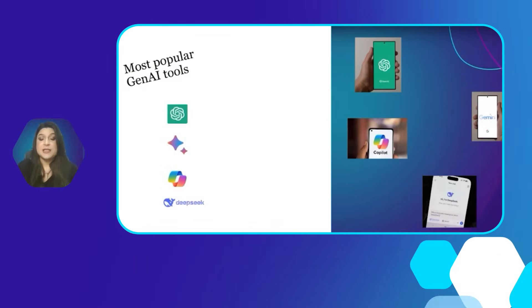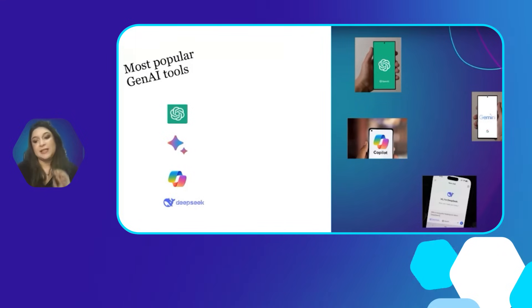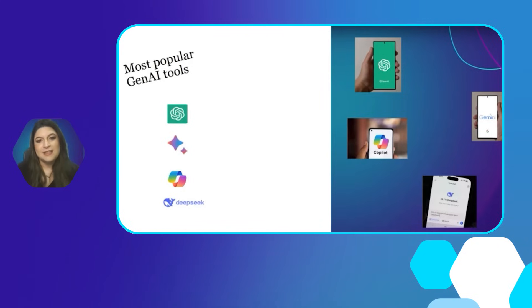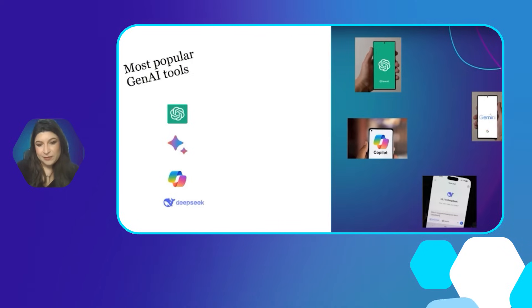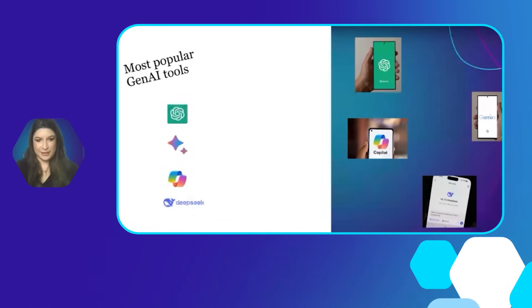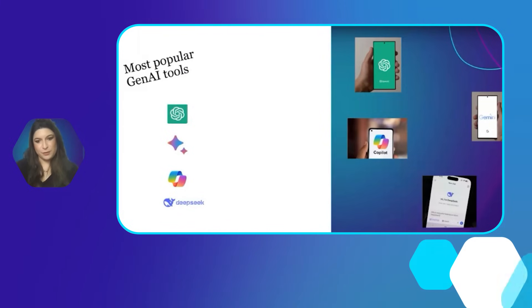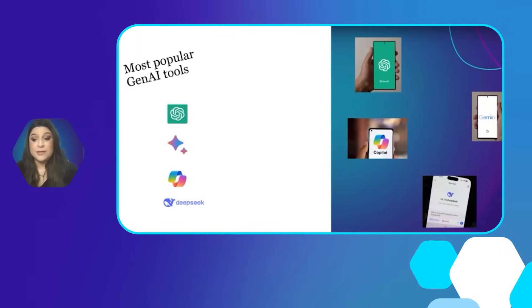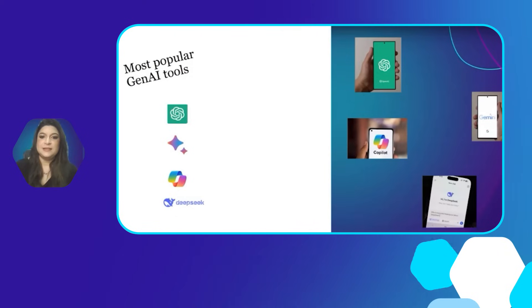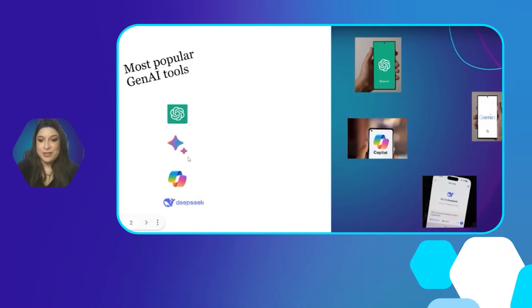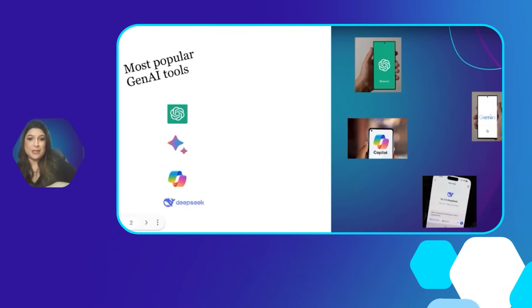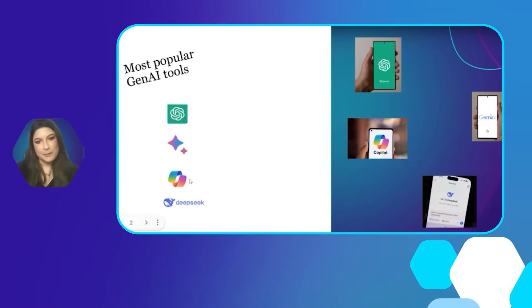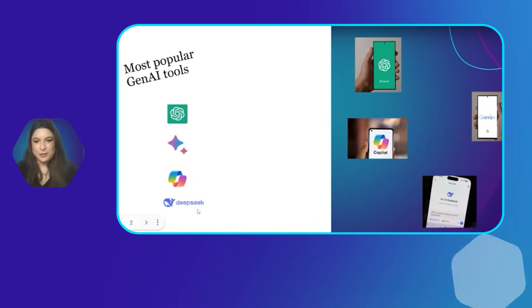The most popular generative AI tools nowadays are the ones I have just presented here. Do you recognize the symbols each one represents? Which is the most current one? Which was the first one to be used? It is right — we've got ChatGPT, the very first one, then Gemini, this evolution. If you consider that it used to be called BARD, that's called Copilot, and that's DeepSeek, the newest one.